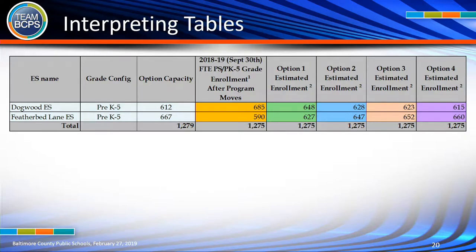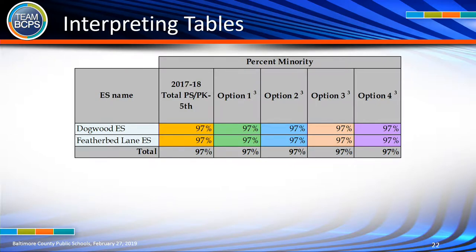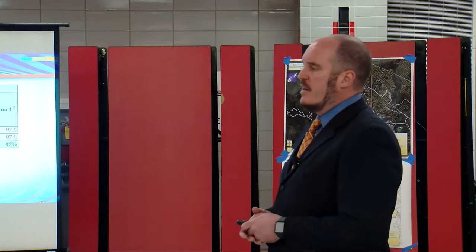Tables show the estimated enrollment per each option — how many students are currently enrolled and how many are anticipated to be inside the buildings in each option if it were implemented. There is also utilization percentage — what percent full is the building. You can see the current utilization percentage and understand the imbalance that exists currently, then look at how each option brings things closer to balance for the two schools. We also track percent minority to look at the impact on demographics, and there is really no impact on demographics as it relates to any of the options considered.